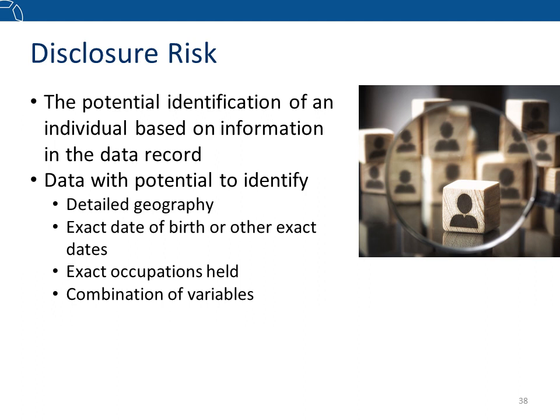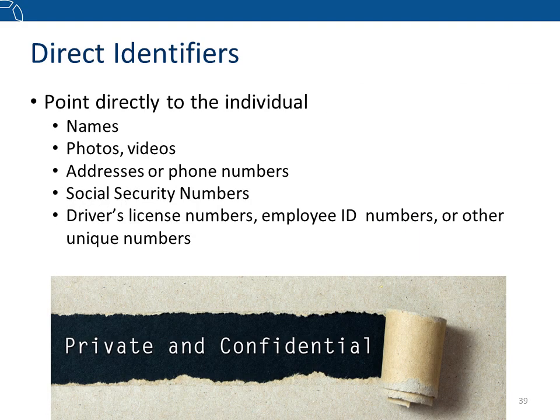Now that we have discussed structuring your data for sharing, you may be concerned about sharing health or educational data protected under federal statutes, and about protecting the identity of your participants. When a data record contains information that can potentially identify an individual, we call this a disclosure risk. There are two types of identifying data: direct and indirect. Direct identifiers explicitly point to particular individuals and are usually easily recognized.